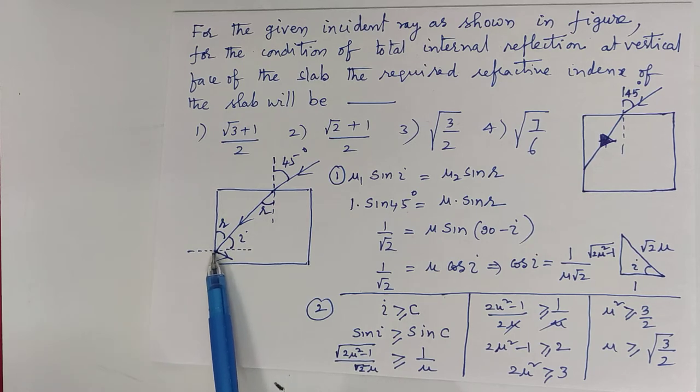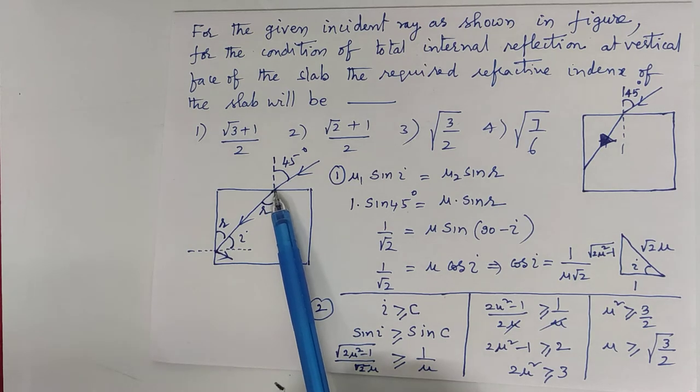Let us assume that the light ray is undergoing total internal reflection. So let us apply Snell's law at this point.